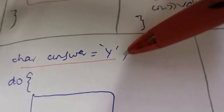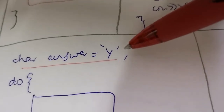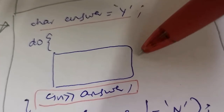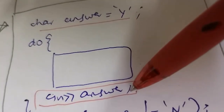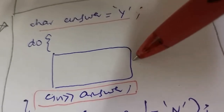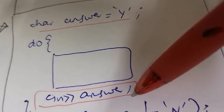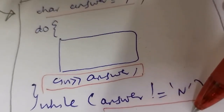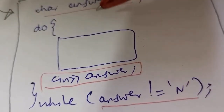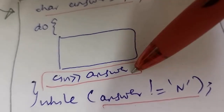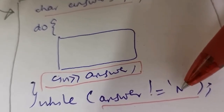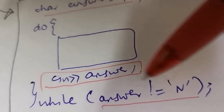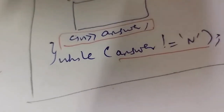Now let's look at the example using the do-while loop. It works the same way — you need an initialization statement, then execute the statements, then get the next value, and then check. If the value stored in 'answer' is not equal to 'n', you go back and execute again. If the value entered is equal to 'n', then you exit.